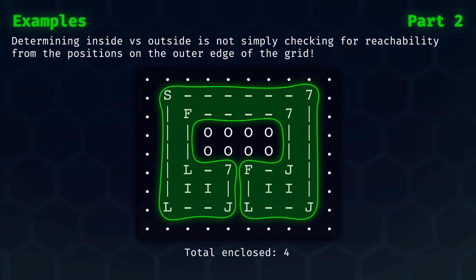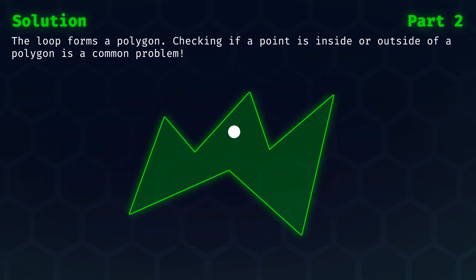Let's jump into the solution of part 2. The loop forms a polygon, or shape if you will. Checking if a point is inside or outside of any arbitrary polygon is a common problem within computational geometry.